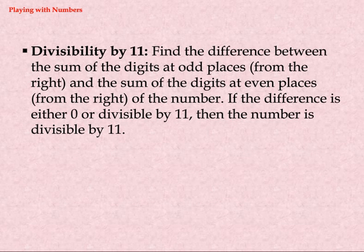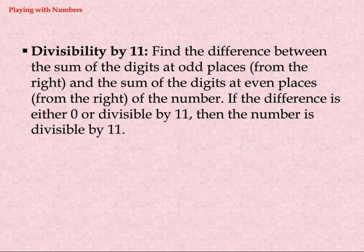Divisibility by 11: find the difference between the sum of the digits at odd places from the right and the sum of digits at even places from the right of the number. If the difference is either 0 or divisible by 11, then the number is divisible by 11.